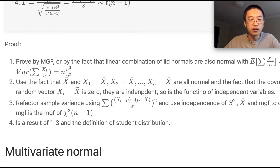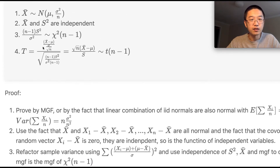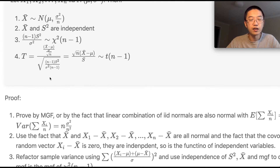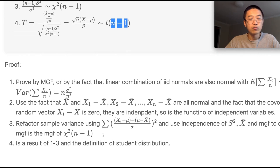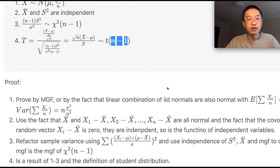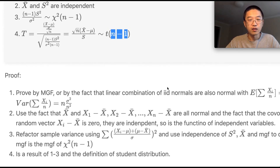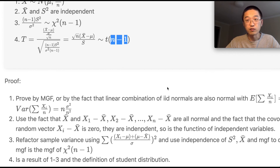The last result, the t-distribution, follows directly from the definition of the standard t-distribution: the numerator is a standard normal and the denominator is a chi-square divided by its degrees of freedom. This gives the Student's t-distribution with n−1 degrees of freedom. That's everything I wanted to cover today — hopefully this serves as a useful review video you can come back to. Thank you everyone.